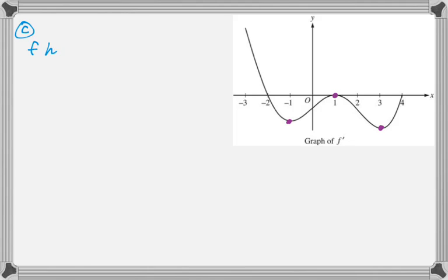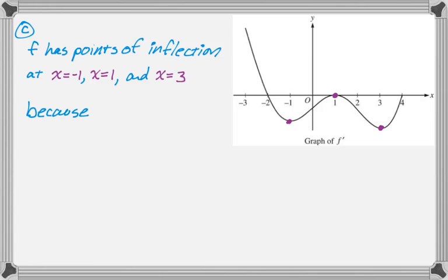And so now I'm just going to write that up. So f has points of inflection at negative 1, at 1, and at 3. And my reason is because f' has relative extrema at those points, which is, I believe, the easiest way to justify this particular answer. You could also say f' changes direction at those points, which is kind of implied by it being a relative extrema. Either of those would be good.